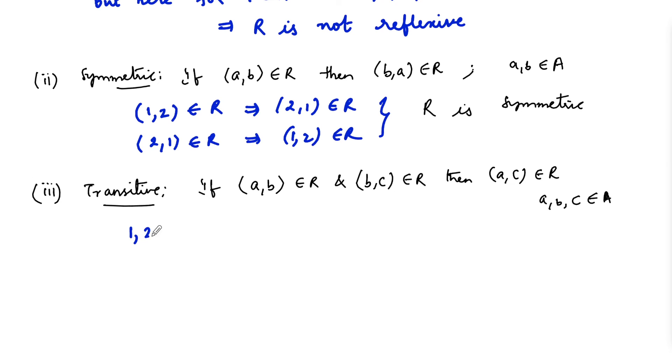So here (1,2) belongs to R and (2,1) belongs to R, which implies that (1,1) must belong to R, but (1,1) is not there in relation R. And so we can say this relation R is not transitive.